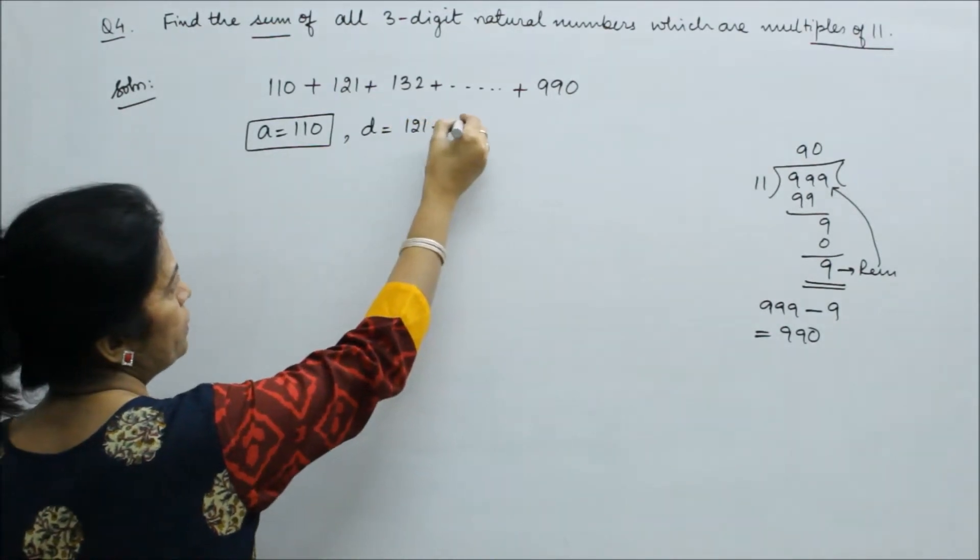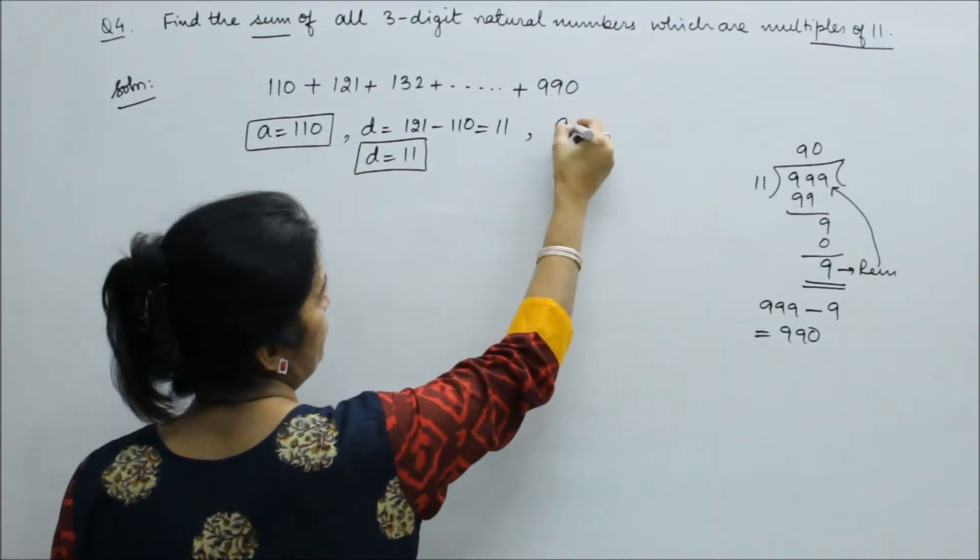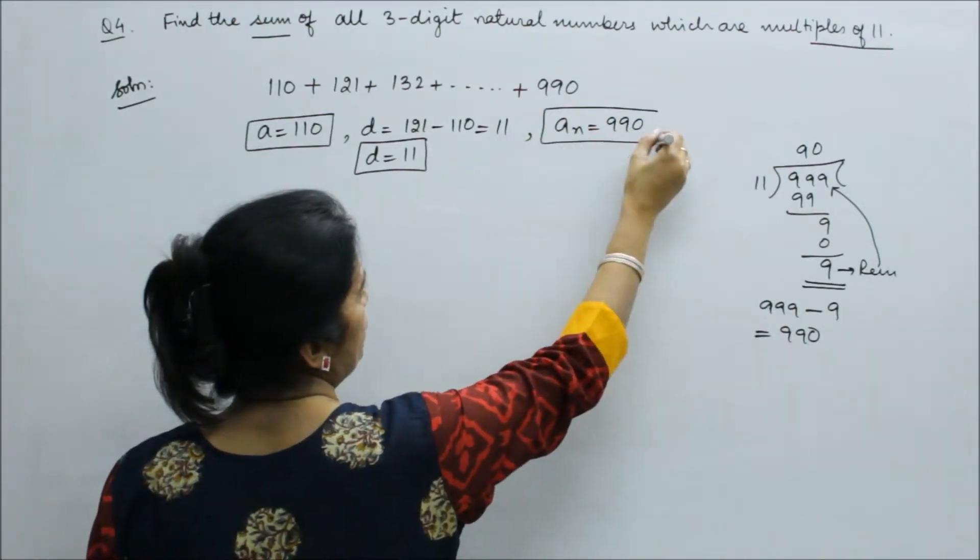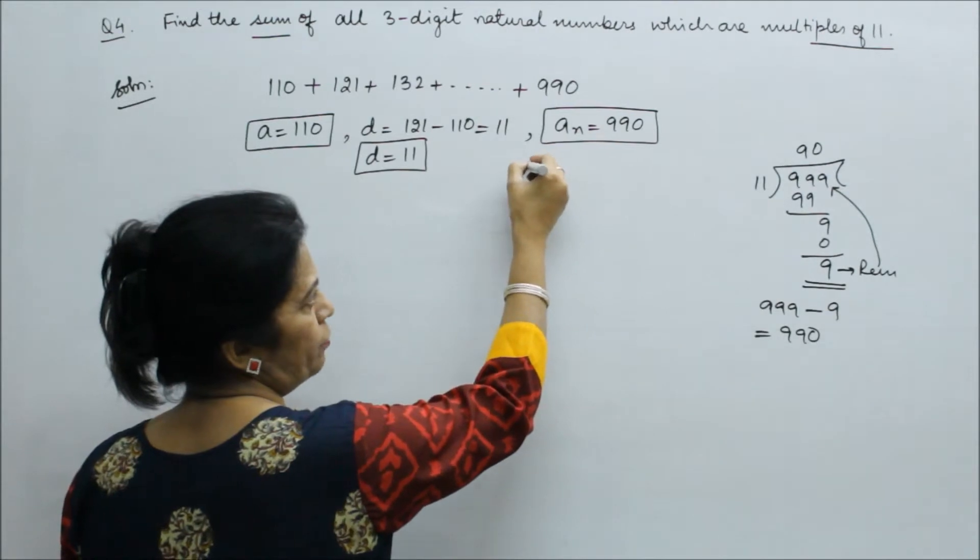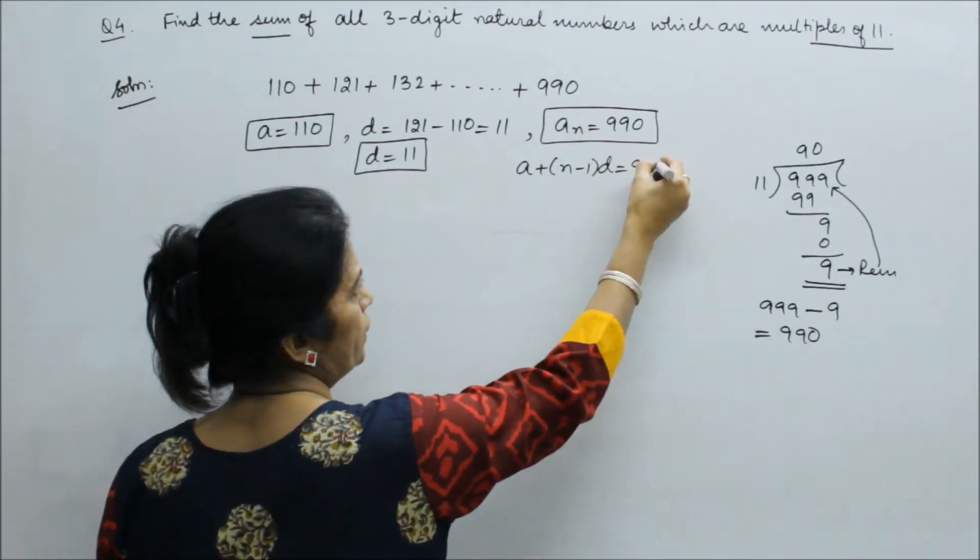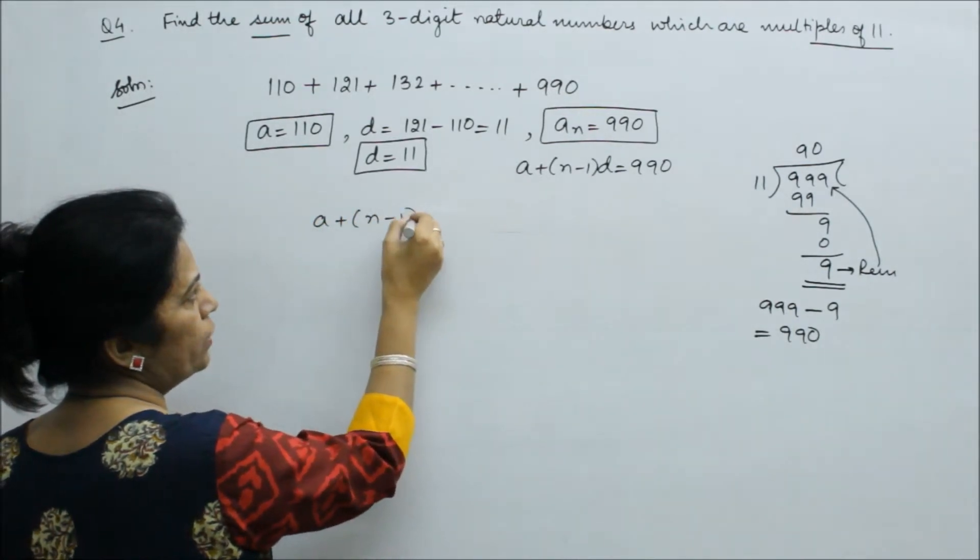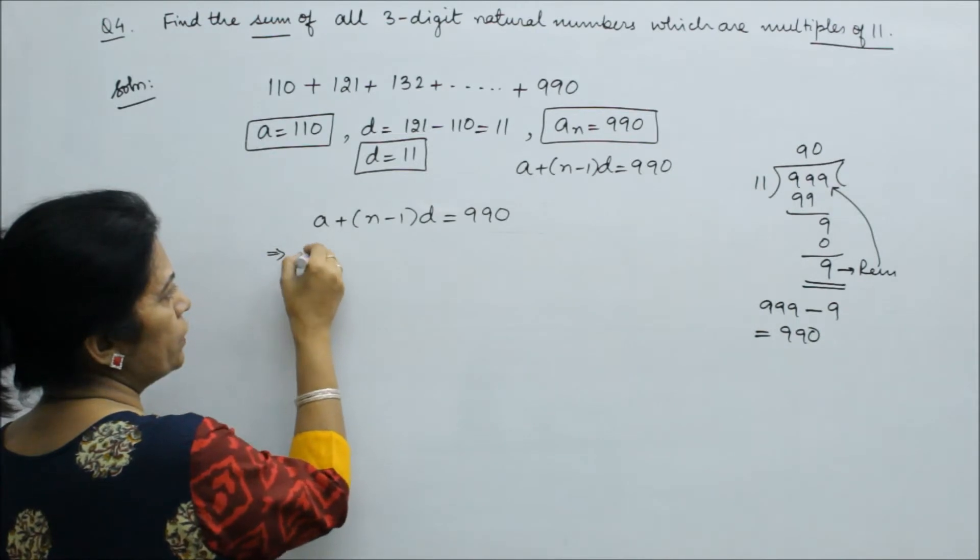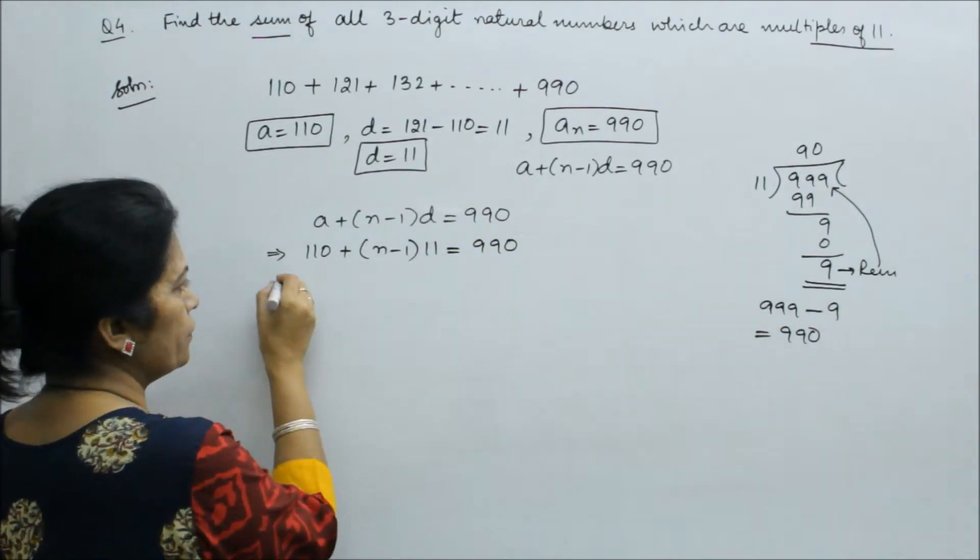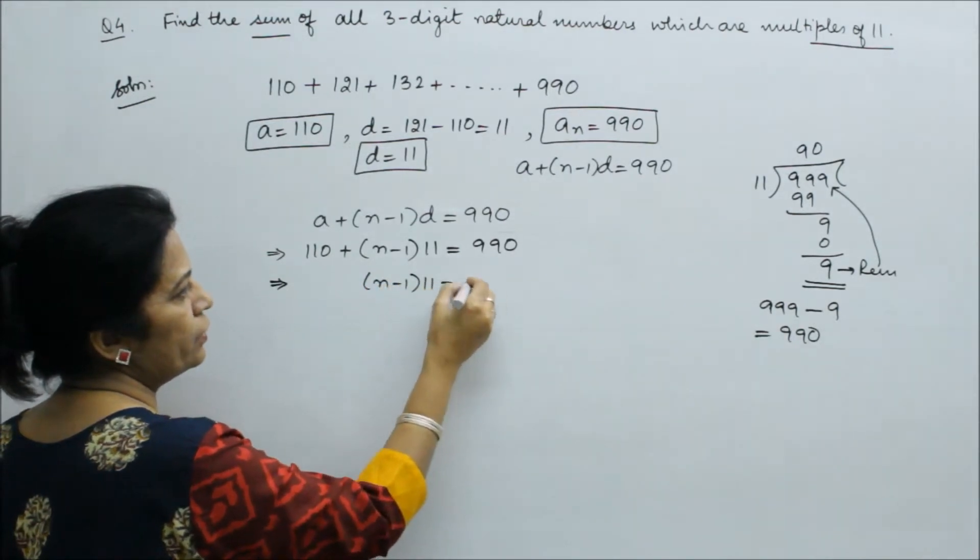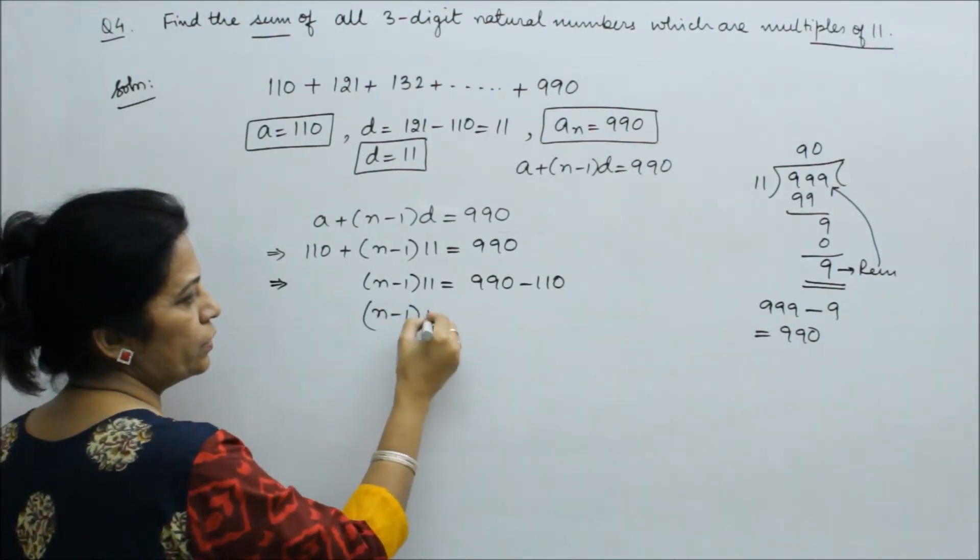Then last term, the nth term, this is 990. So based on 990, now we need to know how many terms. We write the formula: a plus n minus 1 times d equals 990. Here we put values: 110 plus n minus 1 times 11 equals 990.